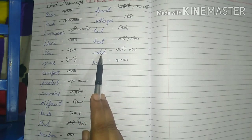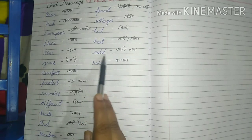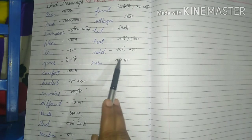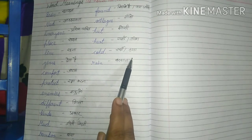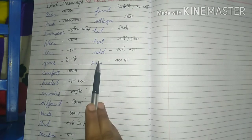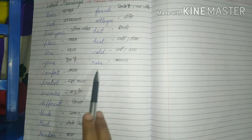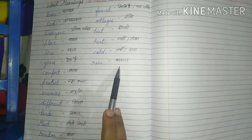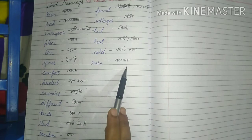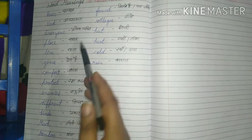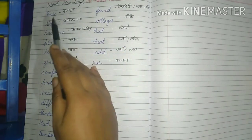Next: COLD — C-O-L-D. Cold means 'sardi ya thanda' (cold). Cold things we also call cold, and the season of sardi. Next: RAIN — R-A-I-N. Rain means 'barsat' — everyone knows this.